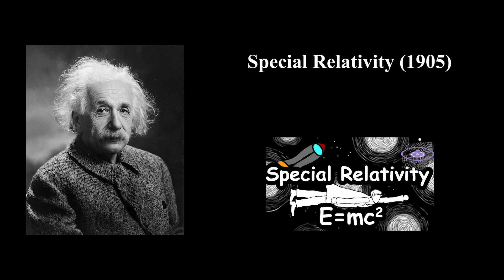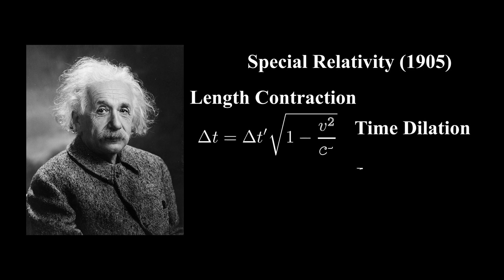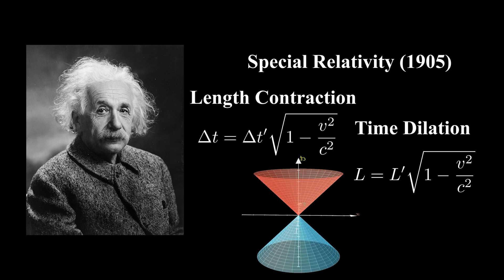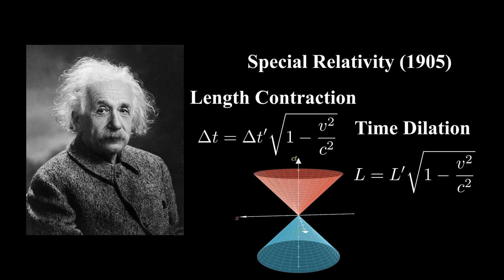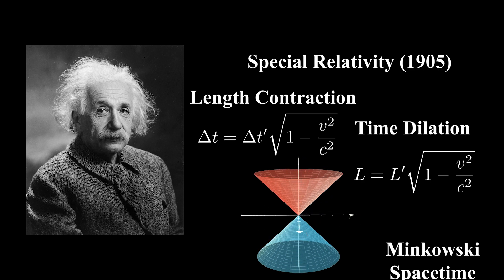In 1905, Albert Einstein defined space and time as an inseparable structure with his theory of special relativity. Special relativity causes length contraction and time dilation depending on the observer's speed. This showed us that the rate at which our position in space changes also affects the rate at which time flows. Thus, we realized that space and time are inseparable dimensions, and were combined into a single spacetime dimension. Since this concept was introduced by Minkowski, it was named Minkowski Spacetime.